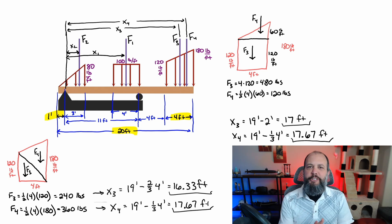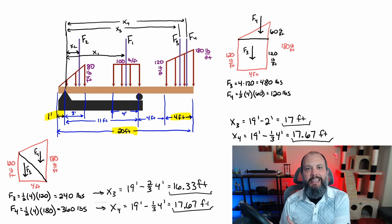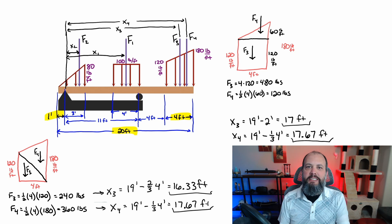So now suppose instead you were using the two triangles method. X4 is still going to be exactly the same. The centroid of the triangle is one-third of the base, closer to the right-hand side. So 19 minus 1.33 is 17.67.